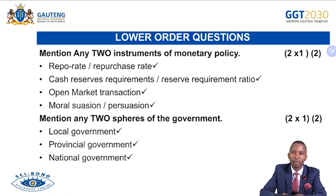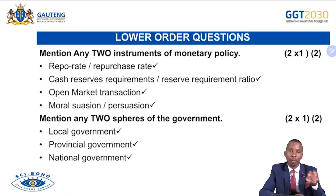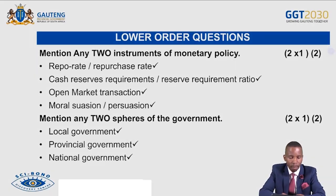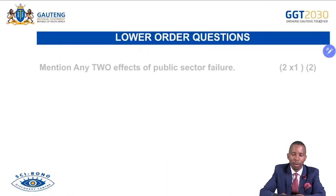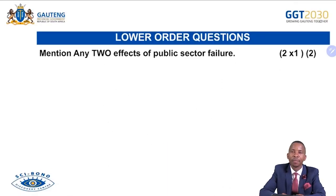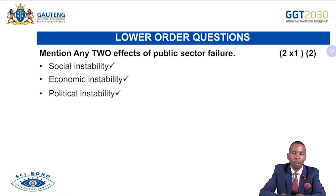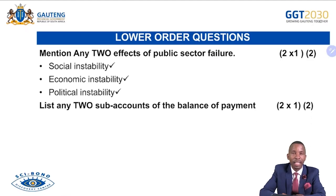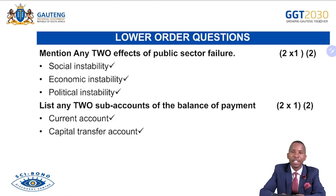You can turn that around: 'What is the role of local government?' is middle order. 'How effective has local government been in South Africa in providing public services?' is higher order. Ensure you play around with each sector so it will be easy to answer questions. 'Mention any two effects of public sector failure': social instability, economic instability, and political instability. 'List any two sub-accounts of the balance of payments': current account, capital transfer account, and financial account. Know these from lower order to higher order.